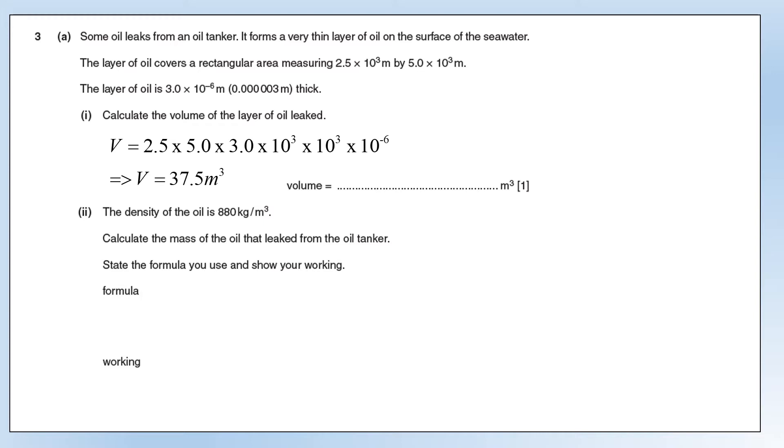What I've done is I've separated out the numbers and the powers of 10, and you'll see on the right-hand side the powers of 10 are going to cancel out, because 10 times 10 to the 3 times by 10 times 10 to the 3 is 10 to the 6, times by 10 to the minus 6, they all cancel out. So what we get left with is a nice simple calculation, which gives us a volume of 37.5 metres cubed, because all the dimensions were in metres.